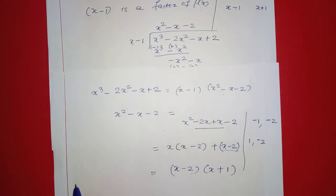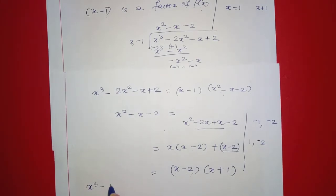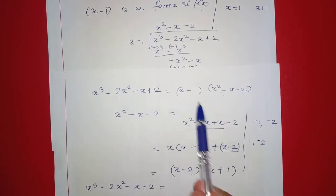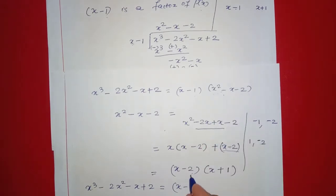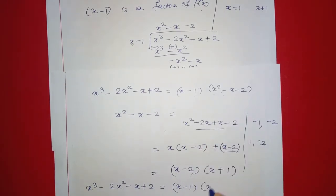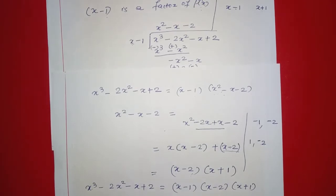So x minus 2 is common: x minus 2 into x plus 1. Therefore x raised to 3 minus 2x squared minus x plus 2 equals x minus 1 times x minus 2 times x plus 1.